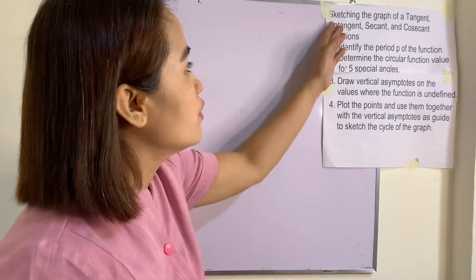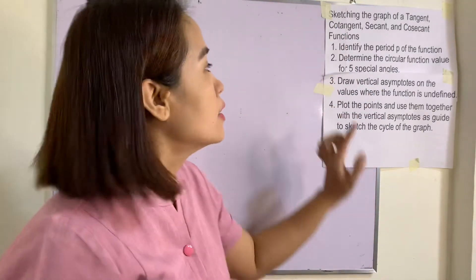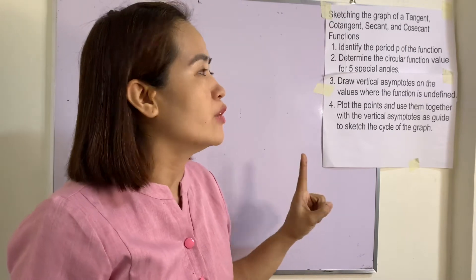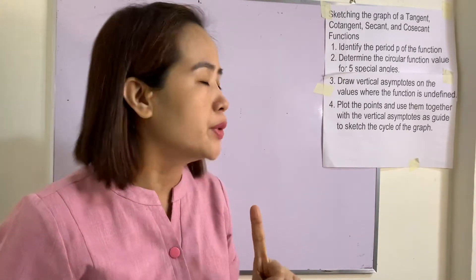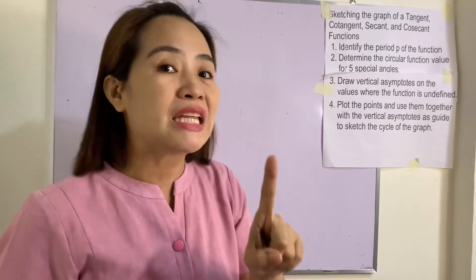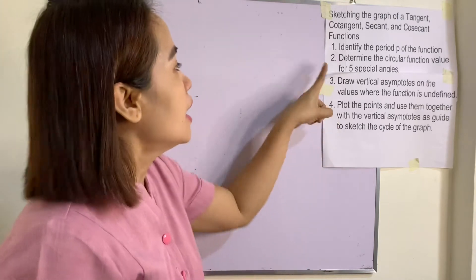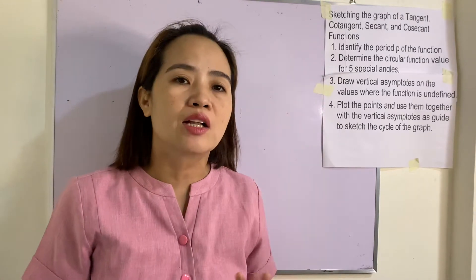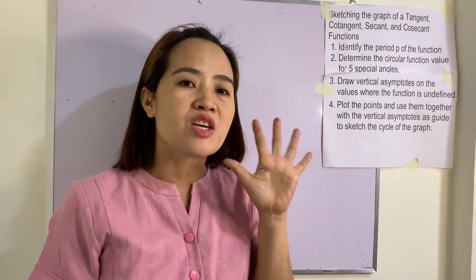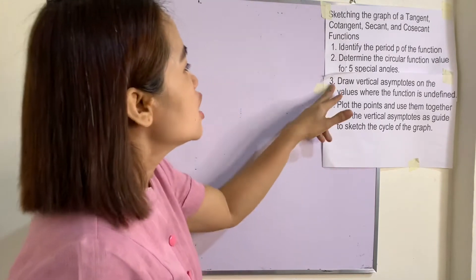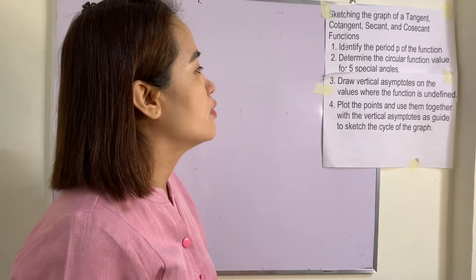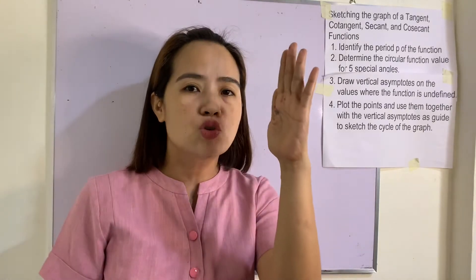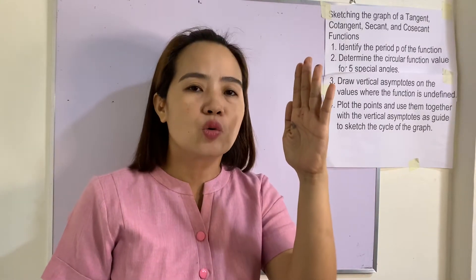I will give you tips on how to sketch these functions. First, identify the period P of the function — that is one complete cycle. Second, determine the circular function value for five special angles; five special angles will be enough. Third, draw vertical asymptotes on the values where the function is undefined.